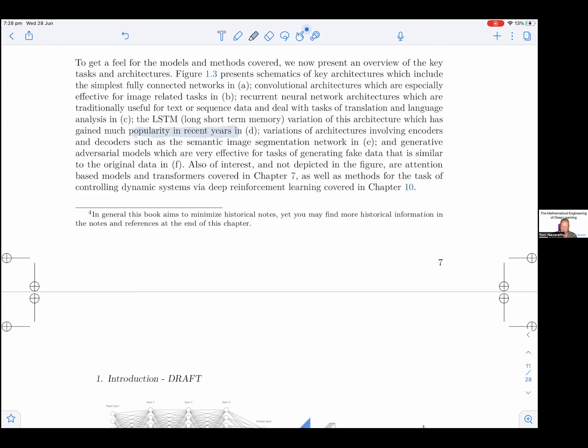Also of interest, and not depicted in the figure, are attention-based models and transformers covered in Chapter 7, as well as methods for the task of controlling dynamic systems via deep reinforcement learning covered in Chapter 8. There's also graphical neural networks covered in Chapter 8, and diffusion models which deal with similar tasks such as GANs, all in Chapter 8.